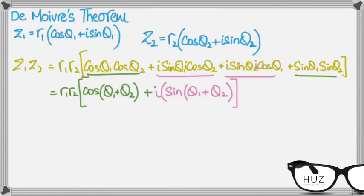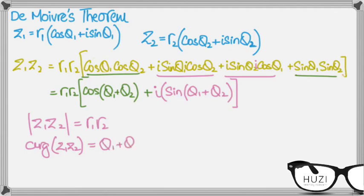So this means that when you multiply two complex numbers, their moduli get multiplied, and their arguments are added, and then you get your final complex number.